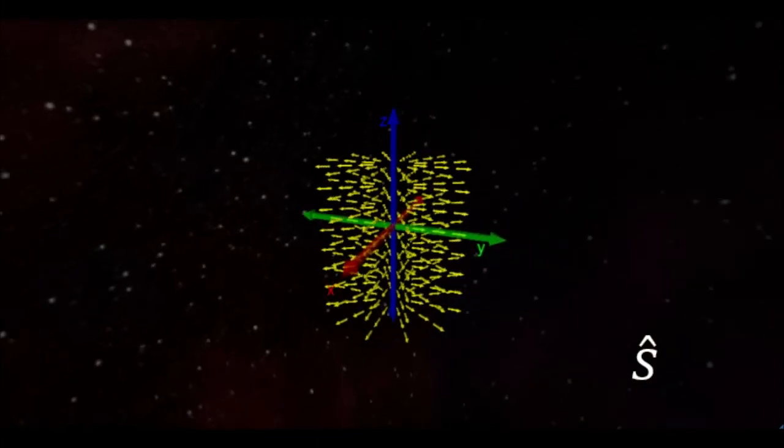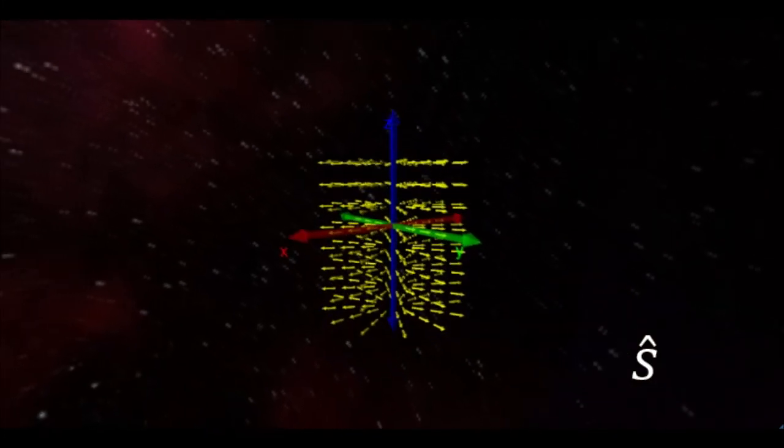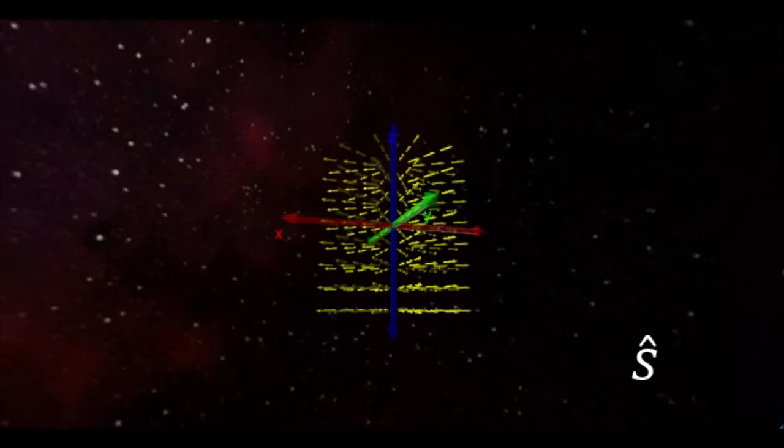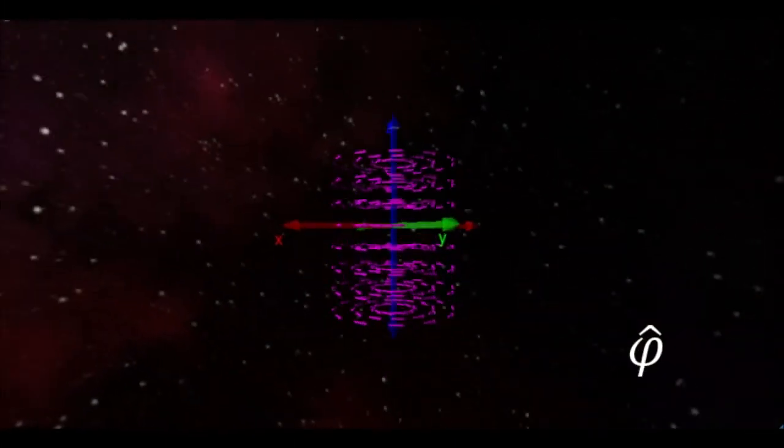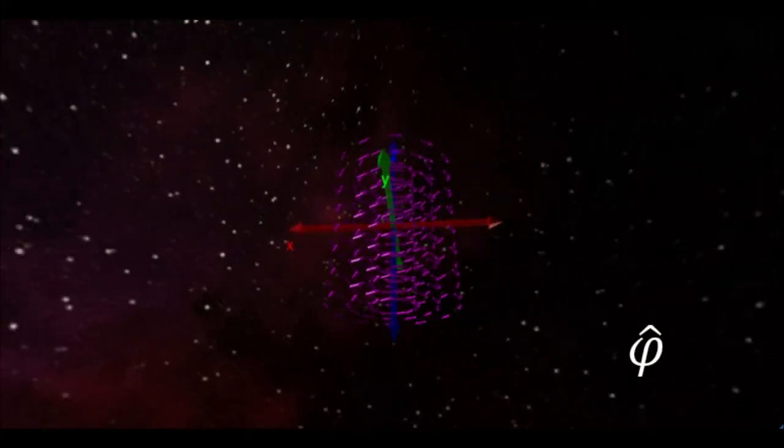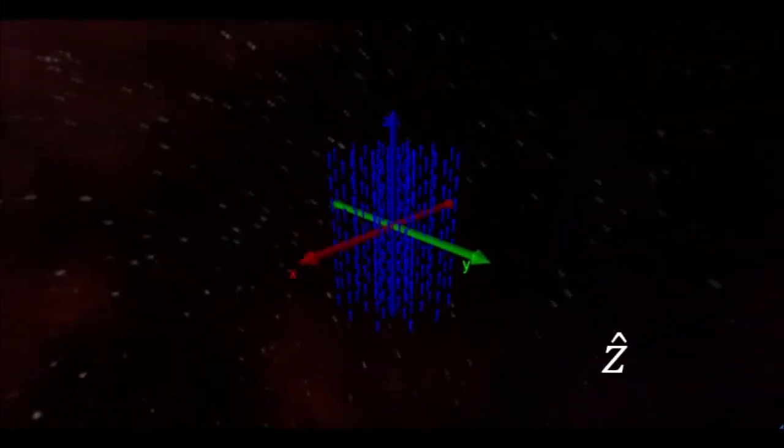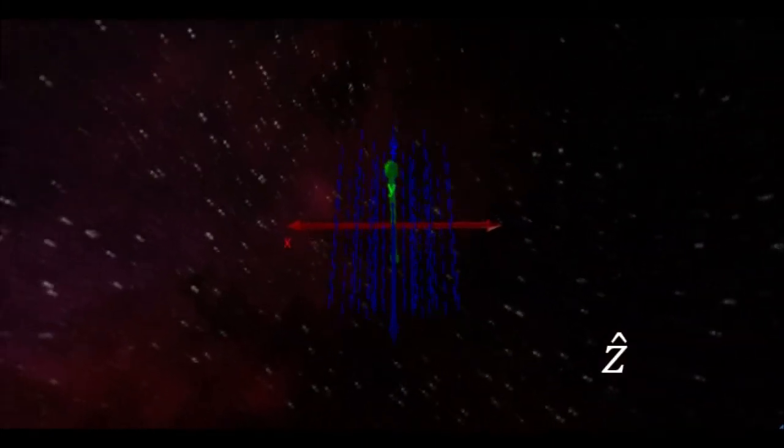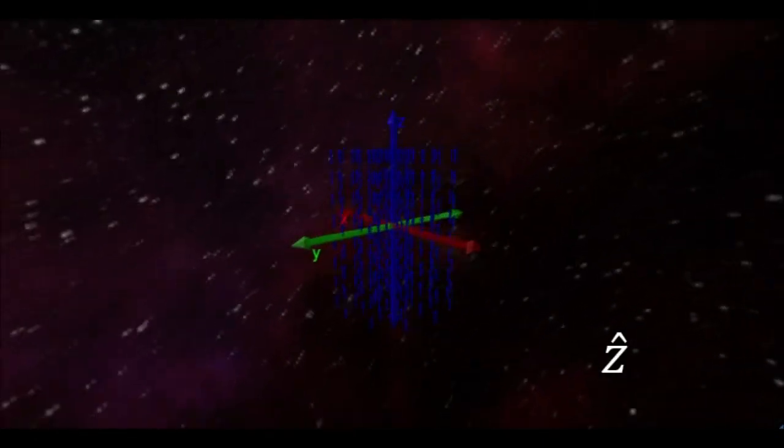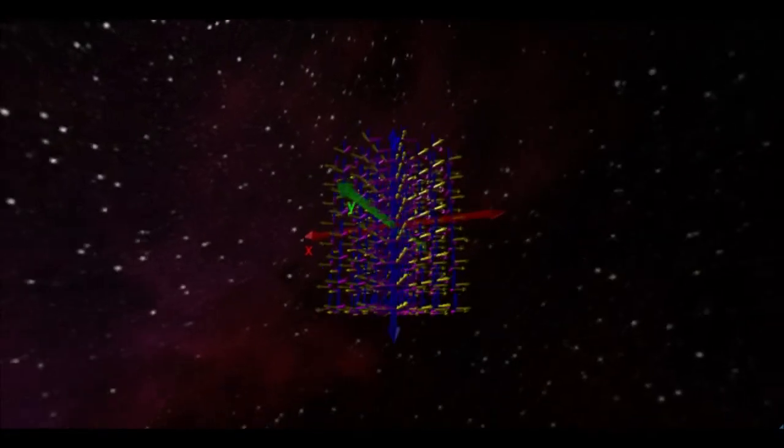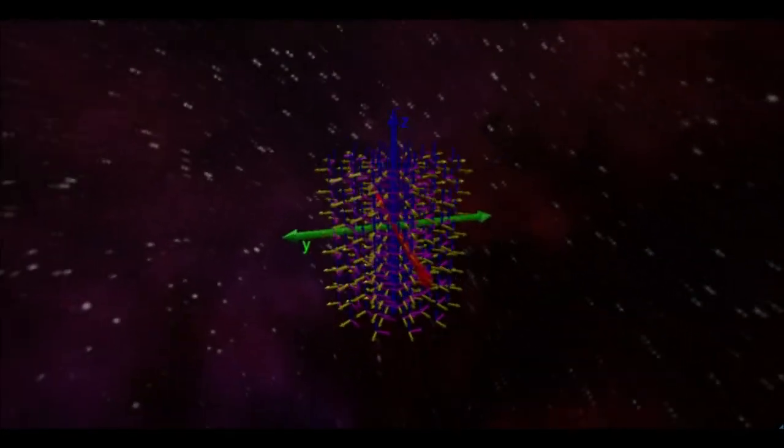These unit vectors are a little more nuanced than the Cartesian unit vectors. At each point in space, the S-hat unit vector points away from the Z axis, the phi-hat unit vector points counterclockwise around the Z axis, and the Z-hat unit vector points along the Z axis, just like before. Although these unit vectors are different at each location in space, they always point perpendicular to each other at each point in space.